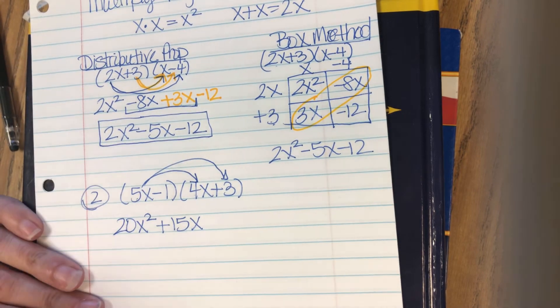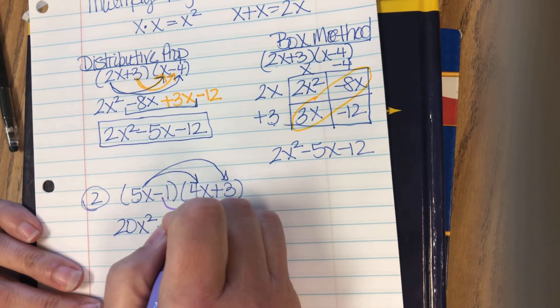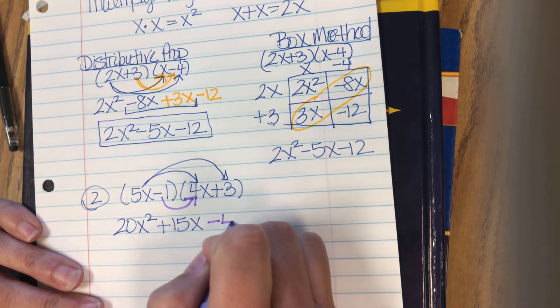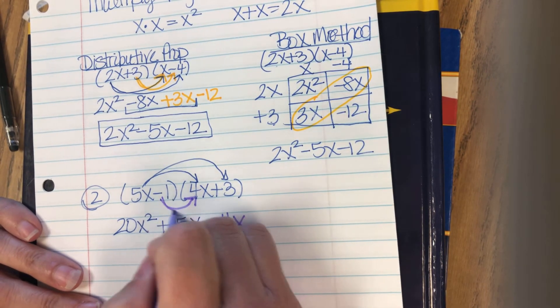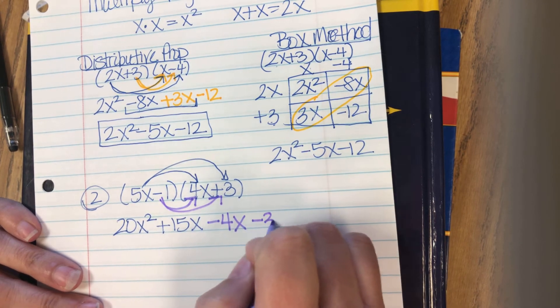Then I take the negative 1 and I distribute it. Negative 1 times 4x is negative 4x. And negative 1 times 3 is negative 3.